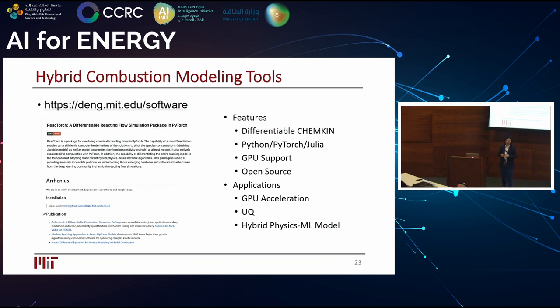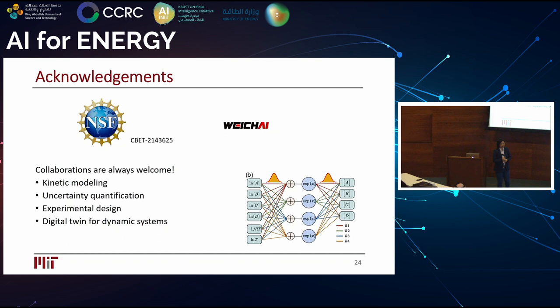If you want to incorporate more machine learning into this framework, you need a differentiable platform. Many people use ChemKin, Cantera, and similar toolboxes, but it's difficult to write your own backpropagation or auto-differentiation functions. We did it for you — feel free to try it out. We acknowledge funding from NSF under the CAREER Award and our industrial partner Weichai for mechanism development work.